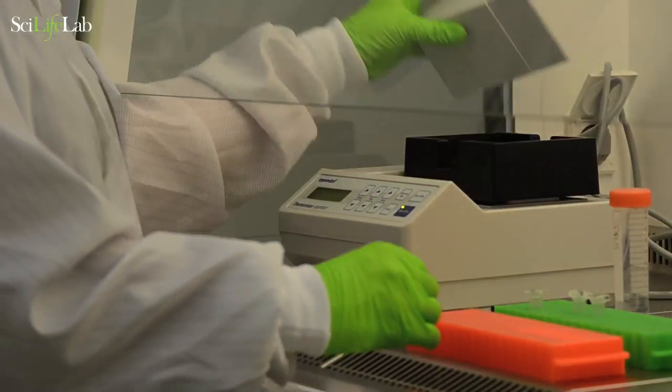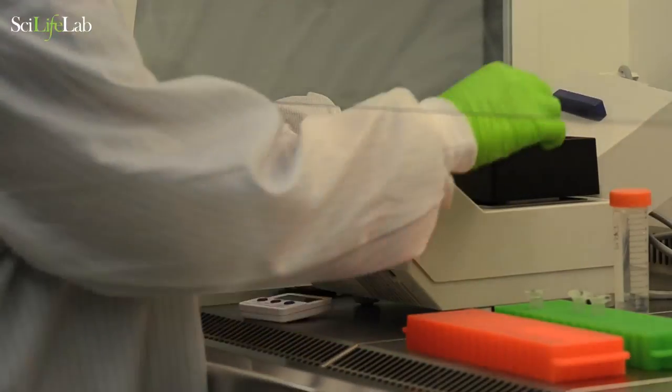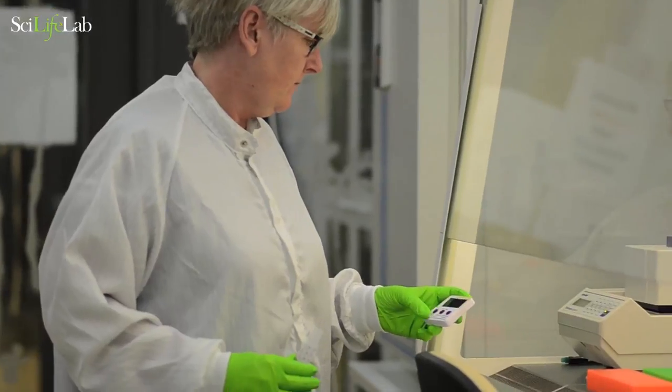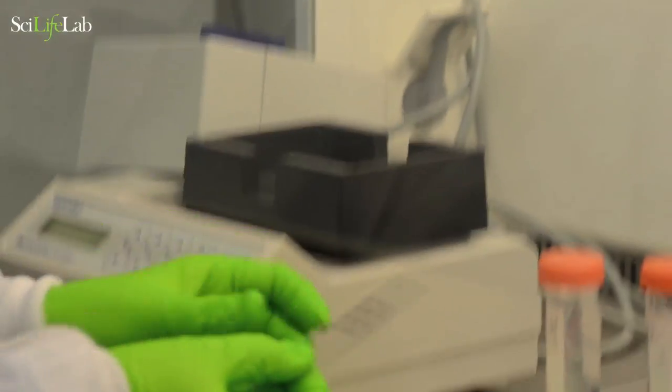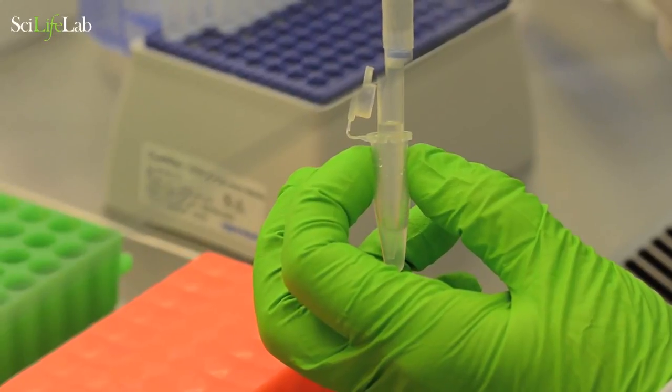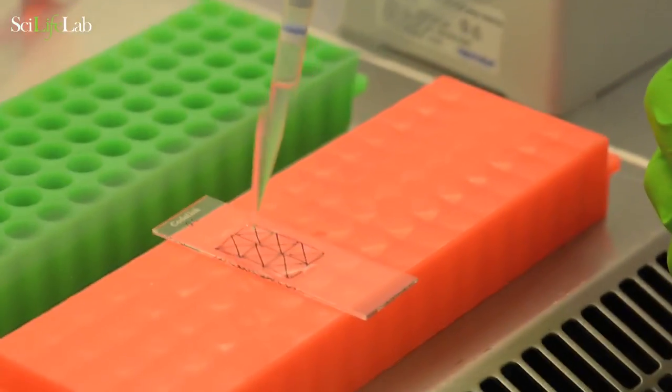Start the ST protocol by putting the glass slide into an incubator at 37 degrees for one minute. Place the glass slide in a horizontal position. Add 900 microliters of 4% formaldehyde diluted in PBS.